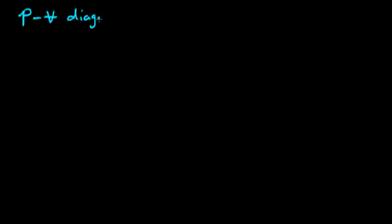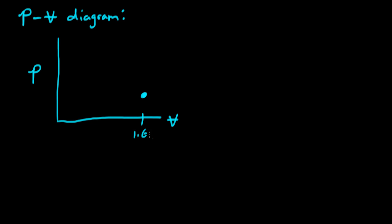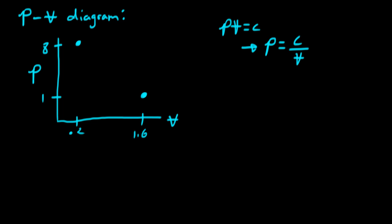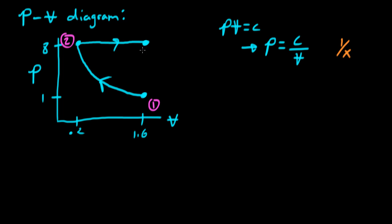Now we have enough information to draw a PV diagram, which is really useful to help us visualize the entire cycle. We have a graph of pressure versus volume. State 1 is at 1.6 meters cubed and 1 bar. State 2 is at 0.2 meters cubed and 8 bar. Since PV is a constant, the pressure varies with volume like a 1/x curve, so we draw that in and label states 1 and 2. State 3 is back at the original volume and at a pressure equal to pressure 2. We draw that in, noting the constant volume and constant pressure processes, and label state 3.